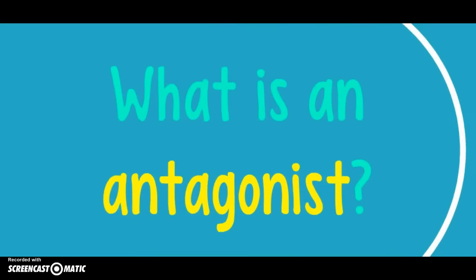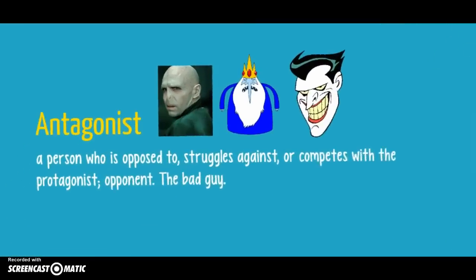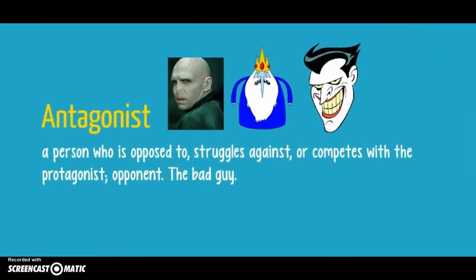If we have a protagonist, we're also going to have an antagonist. An antagonist is a person who is opposed to, struggles against, or competes with the protagonist. It's their opponent, it's the bad guy. It's not always somebody who's trying to destroy the protagonist, but sometimes it's just somebody who causes more problems for them.